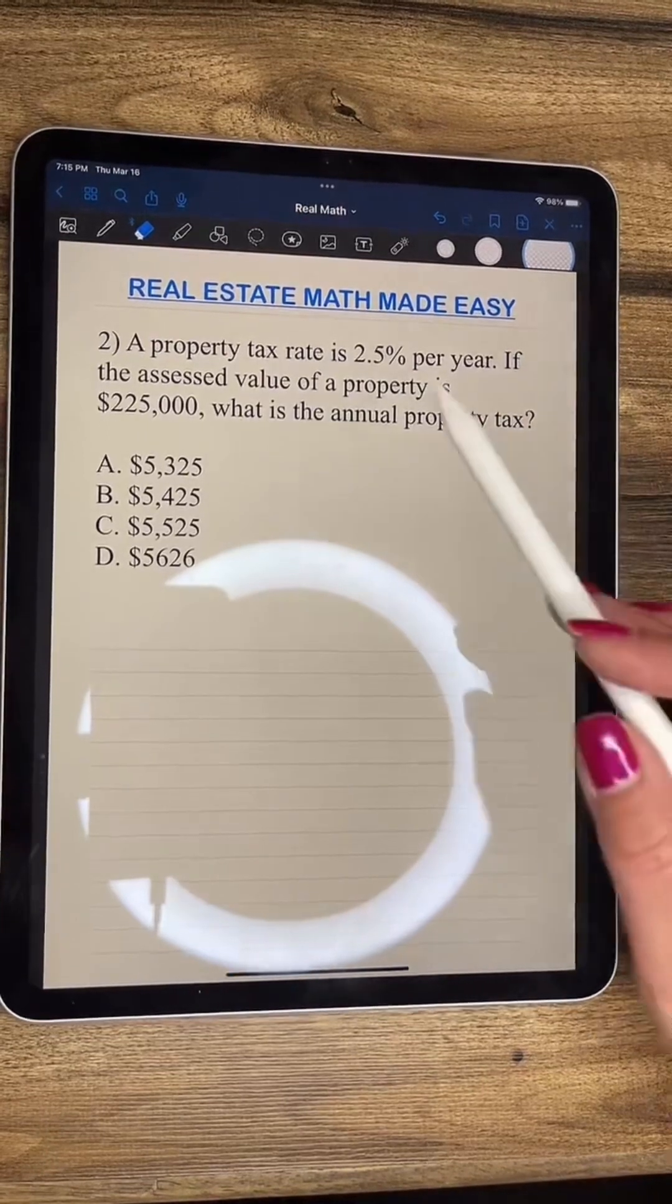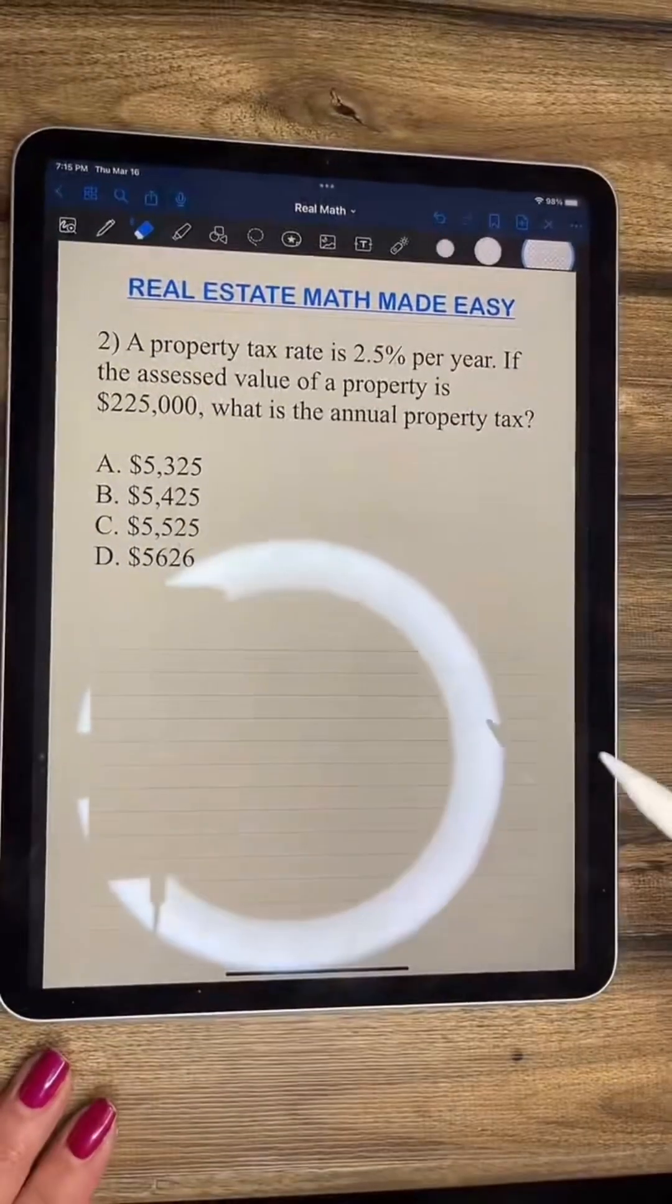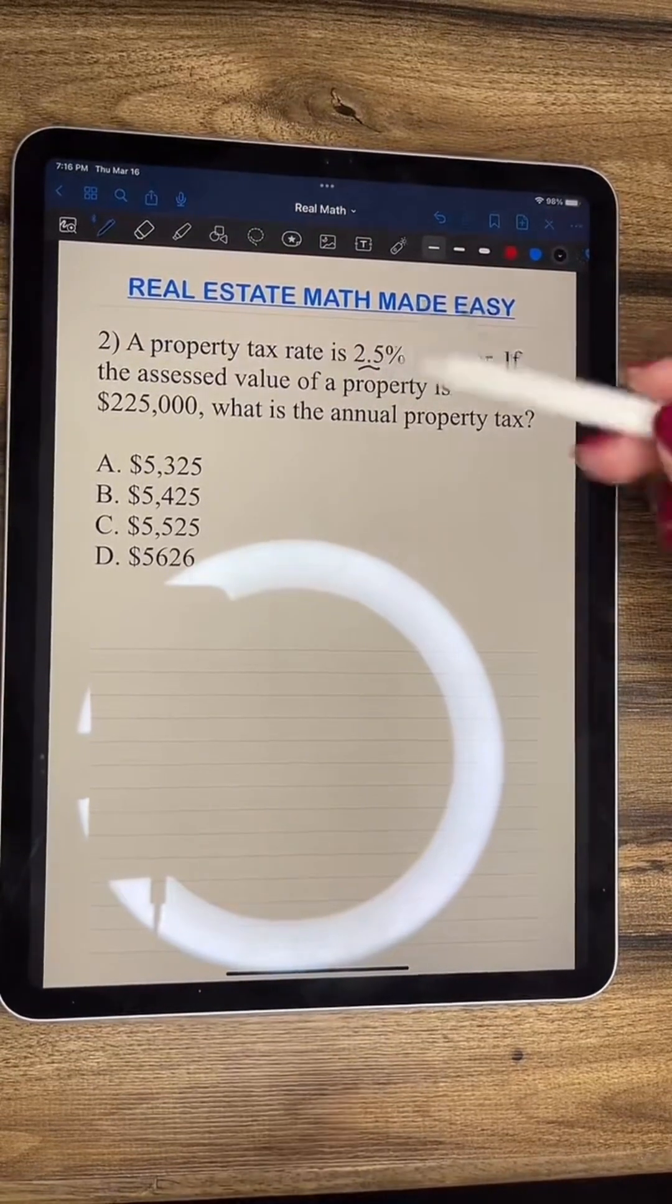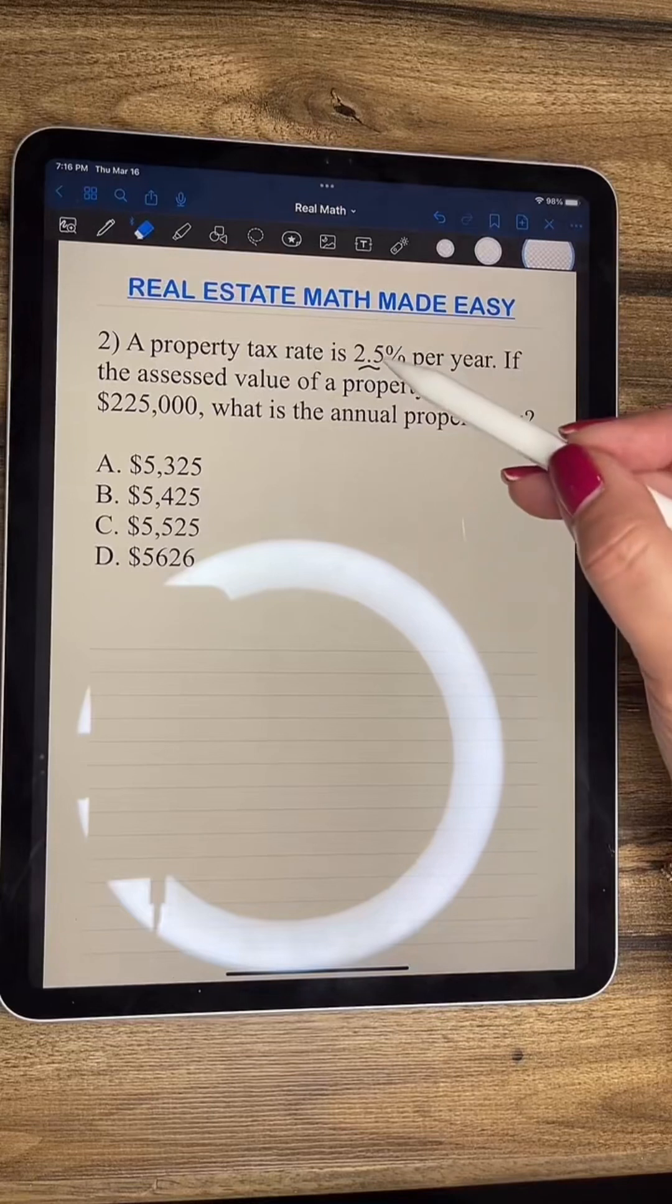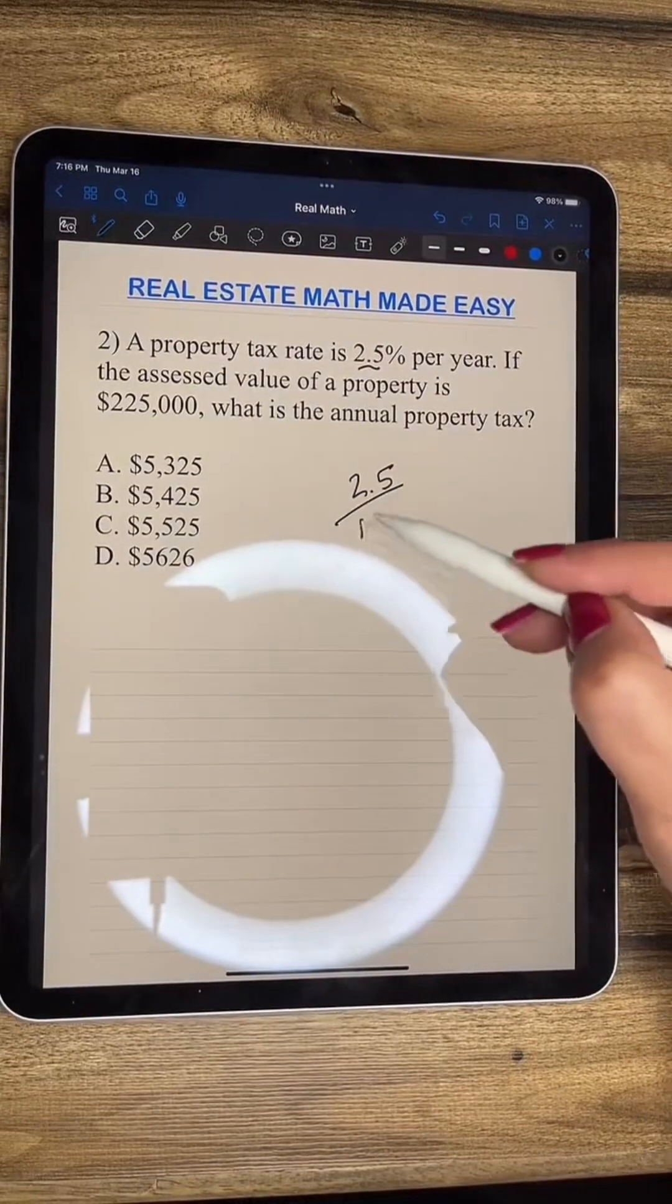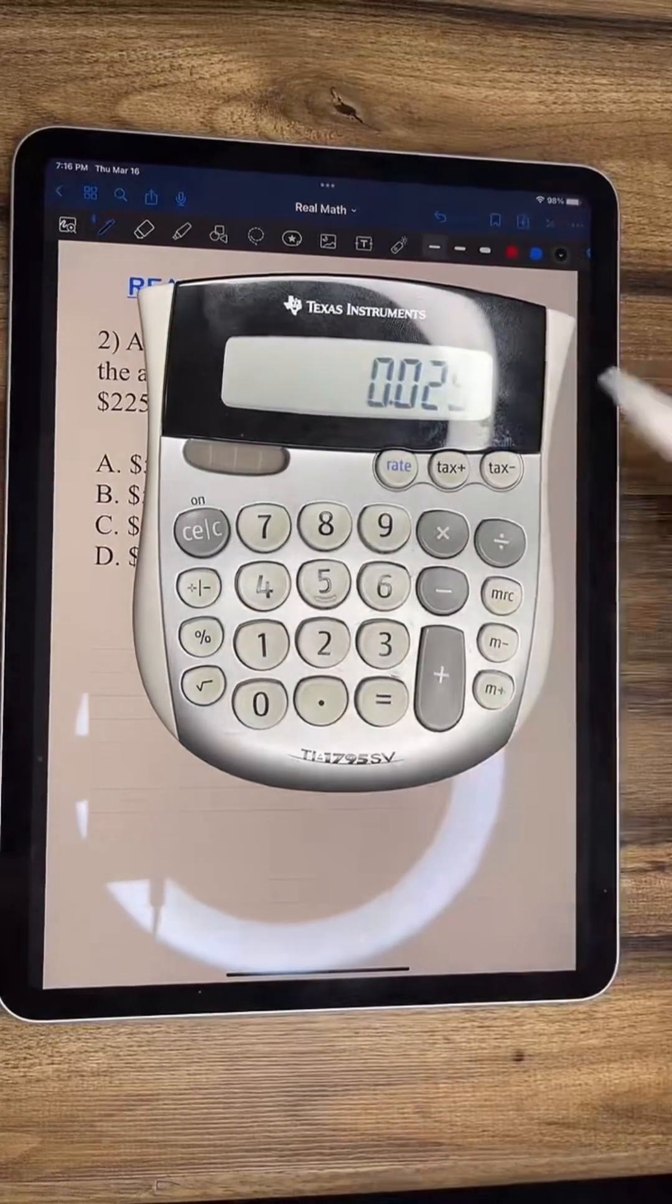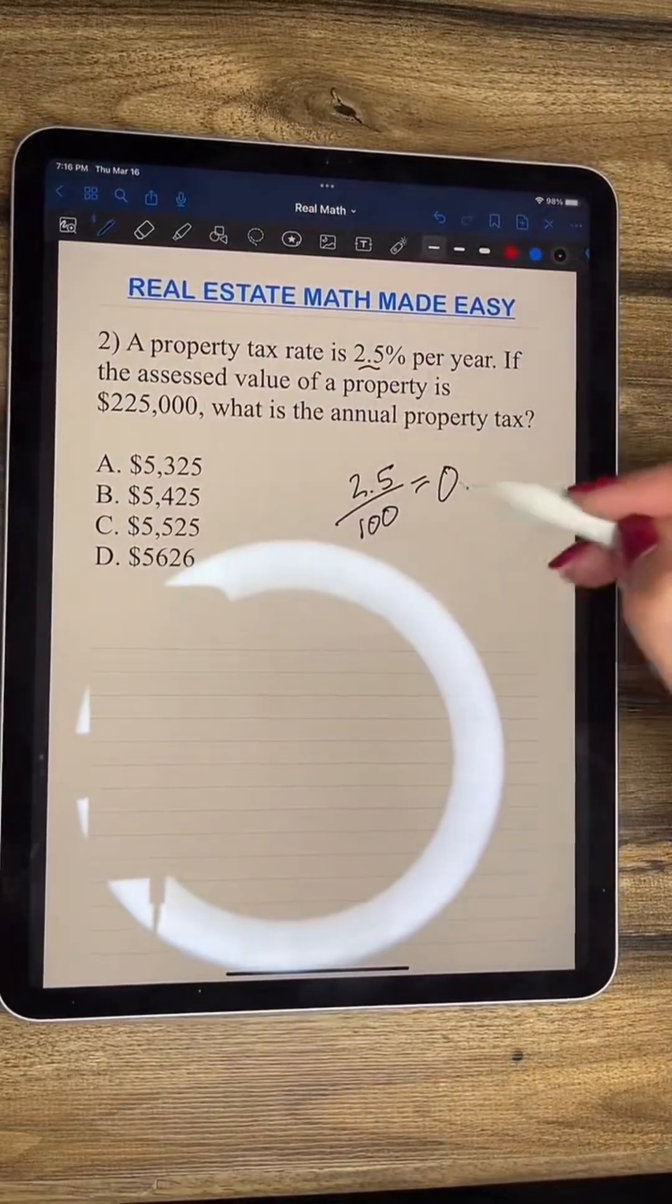All right, here we go. It says here, a property tax rate is 2.5% per year. If the assessed value of a property is $225,000, what is the annual property tax? So you see, it's all about just changing this percent to a decimal and then multiplying it. So once you get that, you'll be good. So remember how to change this decimal. We have 2.5 divided by 100. And what happens when we divide 2.5 by 100? That's our decimal. So we have 0.025.